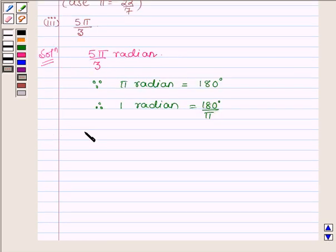This implies 5π/3 radian is equal to 5π/3 into 180 degrees upon π. Now π cancels out with π and also 3 by 3,